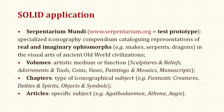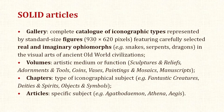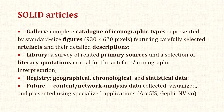Each volume is divided into six specialized chapters based on the type of iconographical subject and the context — for example, fantastic creatures, deities and spirits, or objects and symbols. Each chapter consists of various numbers of articles focused on a specific subject, for example Agatha Damon, Athena, or Aegis. Each article includes three common components: a gallery — a complete catalog of iconographic types represented by standard-sized figures featuring carefully selected artifacts and their detailed descriptions; and a library — a survey of related primary sources and the selection of literary quotations crucial for the artifact's iconographic interpretation.